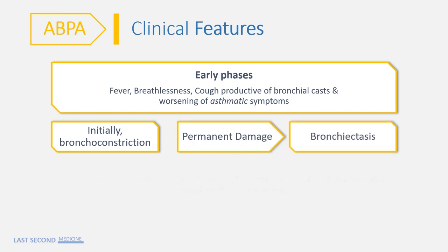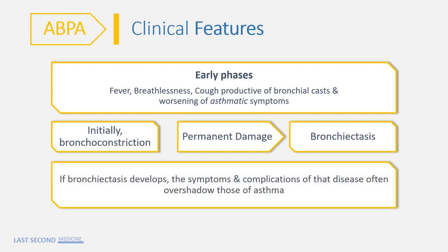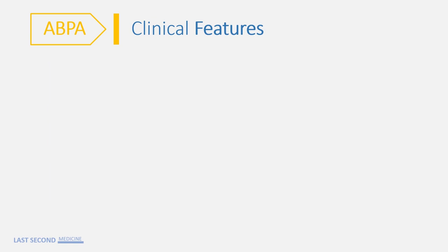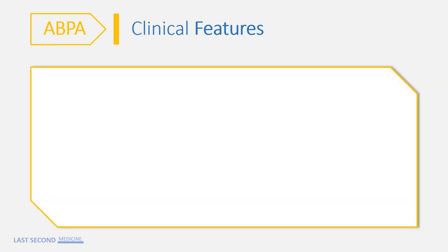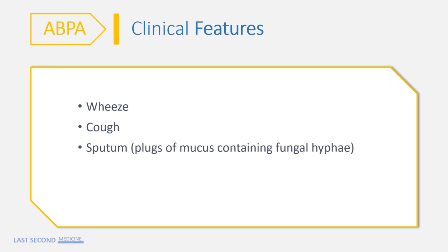If bronchiectasis develops, the symptoms and complications of that disease often overshadow those of asthma. Clinical features include wheeze, cough, sputum consisting of plugs of mucus containing fungal hyphae, dyspnea, and recurrent pneumonia.